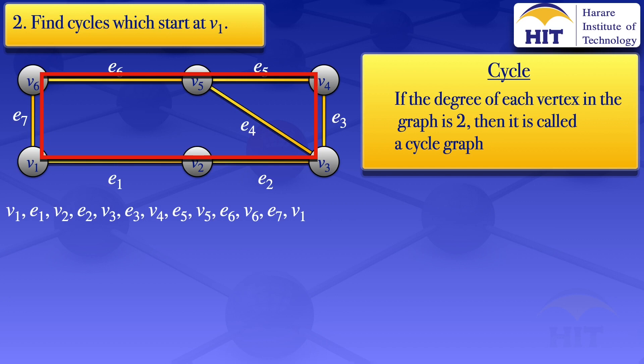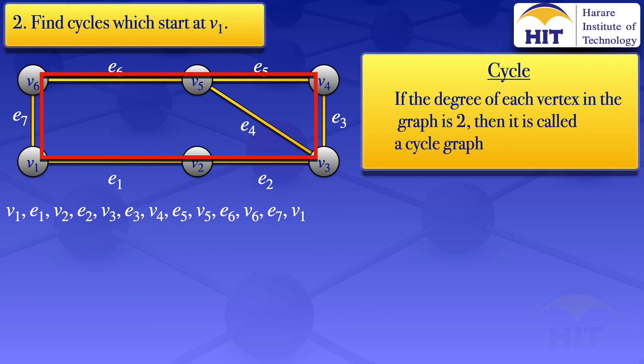We also have another cycle in the clockwise direction, moving from v1, v6, v5, v4, v3, v2, then back to v1. That cycle is: v1, e7, v6, e6, v5, e5, v4, e3, v3, e2, v2, e1, then back to v1.